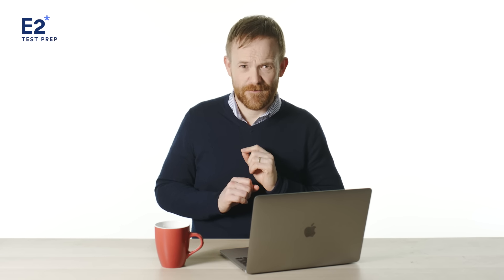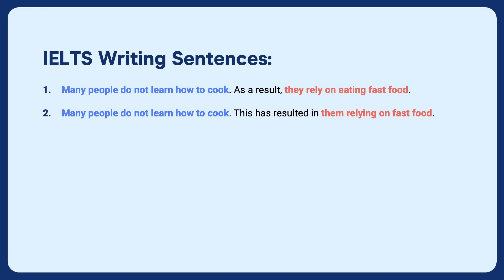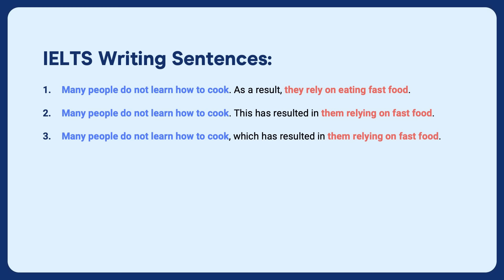There are more things we can do. 'Many people do not learn how to cook. This has resulted in them relying on fast food.' Now we have two very different options — both do the same thing, but the second one is arguably more complex: resulted in plus a noun phrase. We can also write: 'Many people do not learn how to cook, which has resulted in them relying on fast food.'